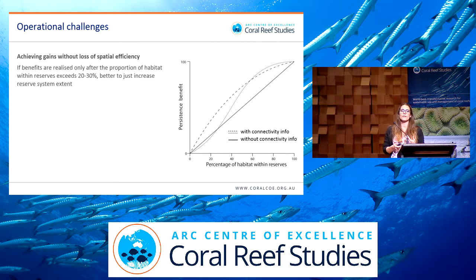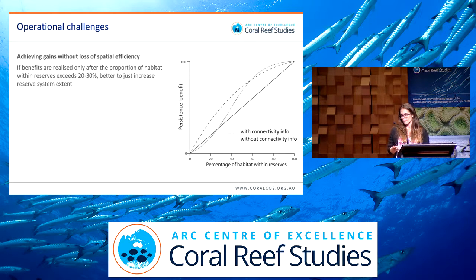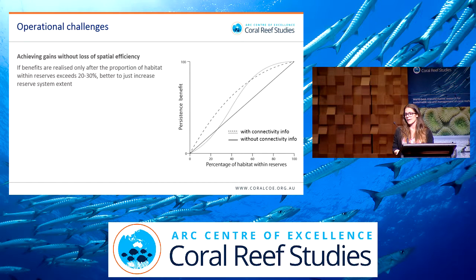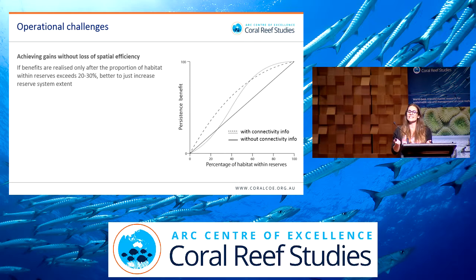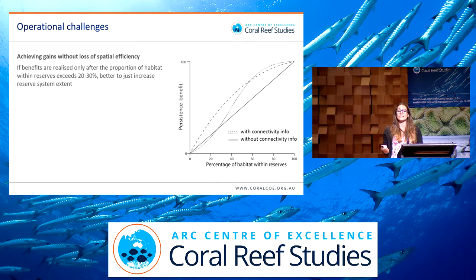In addition to those conceptual challenges, there are a couple of operational challenges. The first is that it's only worthwhile using connectivity information to inform conservation planning if we can see gains in persistence benefits within a reasonable proportion of habitat being protected within reserves. As the percentage of habitat within reserves increases, we see a persistence benefit. We hope that by using connectivity information we can increase the slope of that curve within 20 to 30 percent of habitat in reserves, which is what can be realistically achieved in many places. If gains only appear at 40 to 50 percent, we're better off just focusing on increasing the extent of the reserve network.